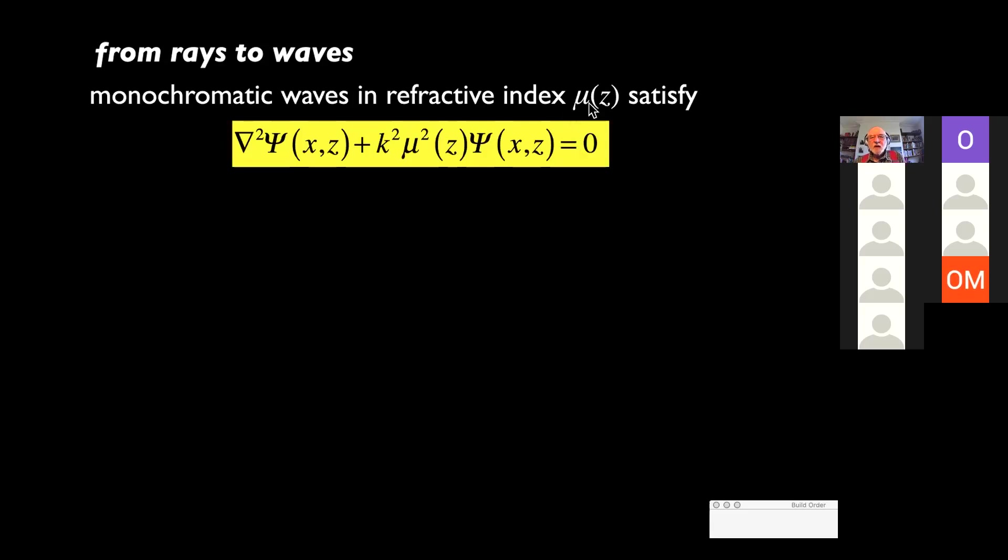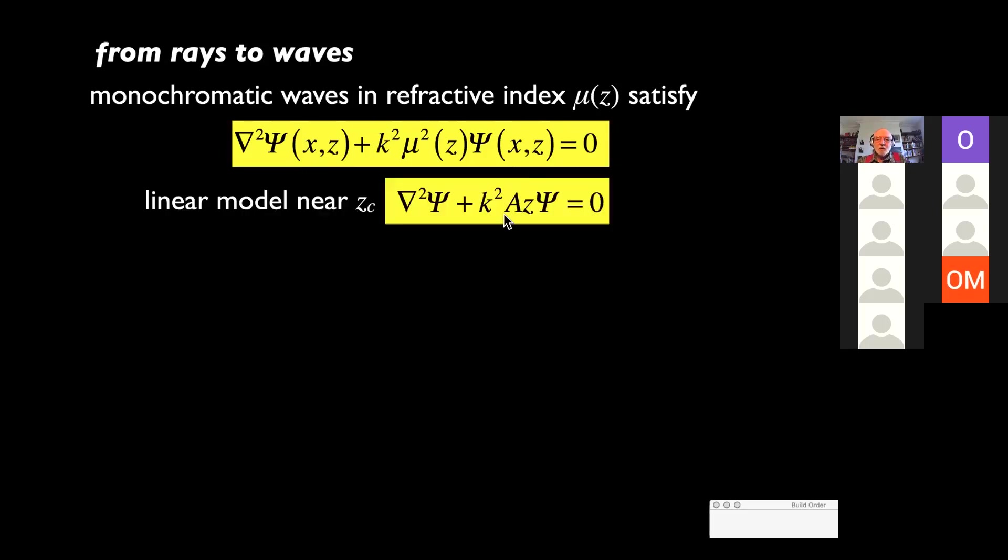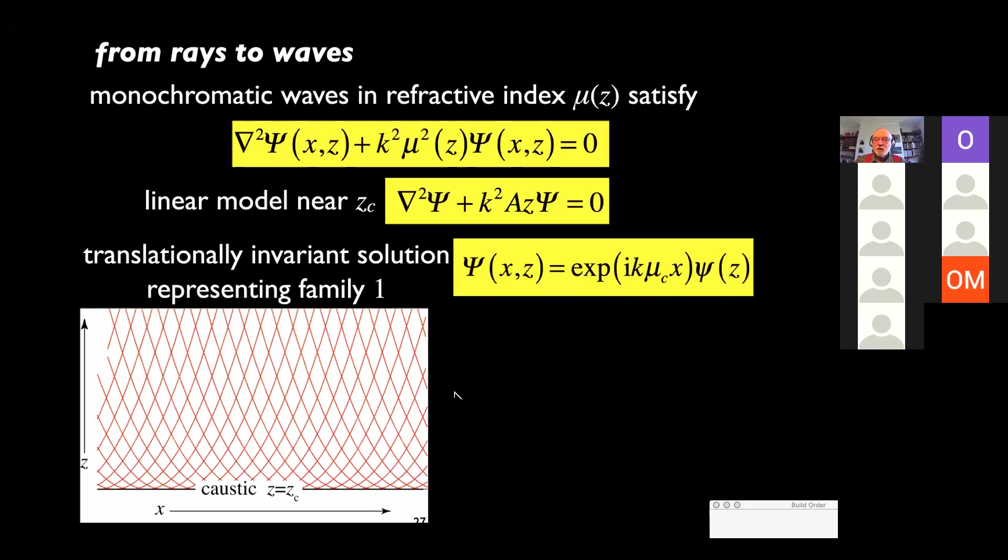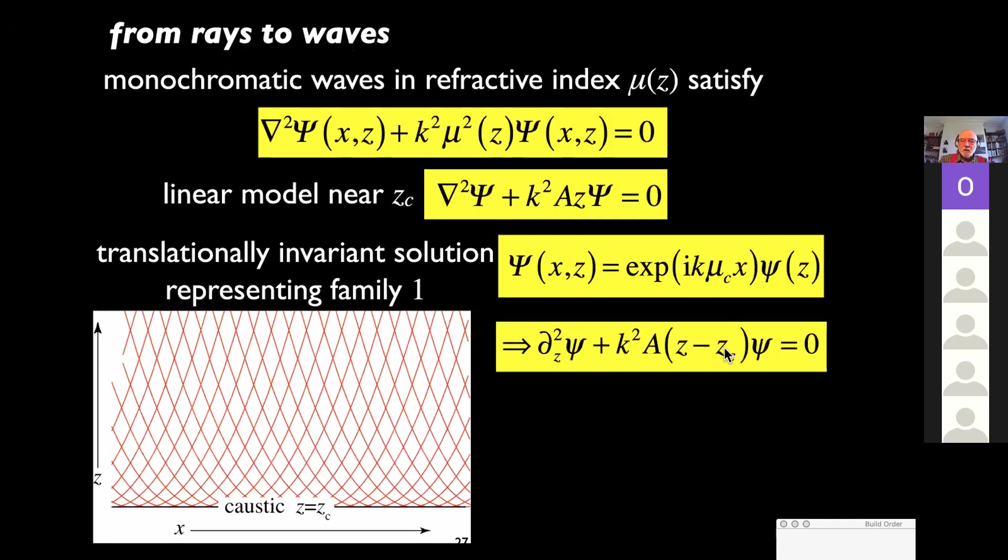And they made a linear model near the critical layer. The refractive index varies linearly, locally. And they were able to solve the Schrödinger equation. It corresponds to this particular family of rays. And they want to look at the waves near this place where the rays are horizontal, near the caustic. And they were able to solve the equation. There's a sideways moving exponential together with something that varies with height. And locally, that's the ordinary differential equation describing the height, z minus zc.